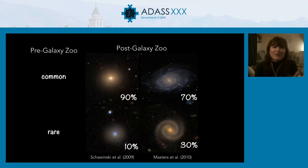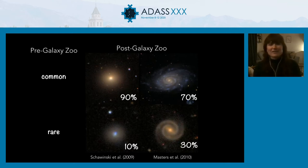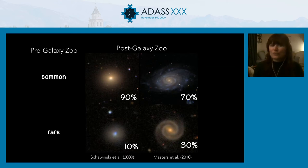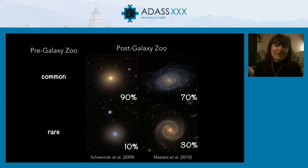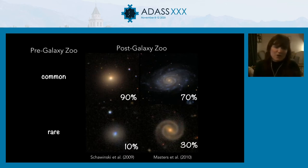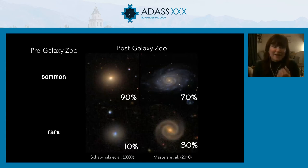It's still worth noting that, despite these results being over a decade old, there are still some papers that very simply cut their sample based on colour and say that this is a morphological split — and it's not. All these data tables are open, so if you're doing something like this, I really strongly encourage you to grab the Galaxy Zoo tables to make sure that if you're trying to split on morphology, you can do it with some accuracy.